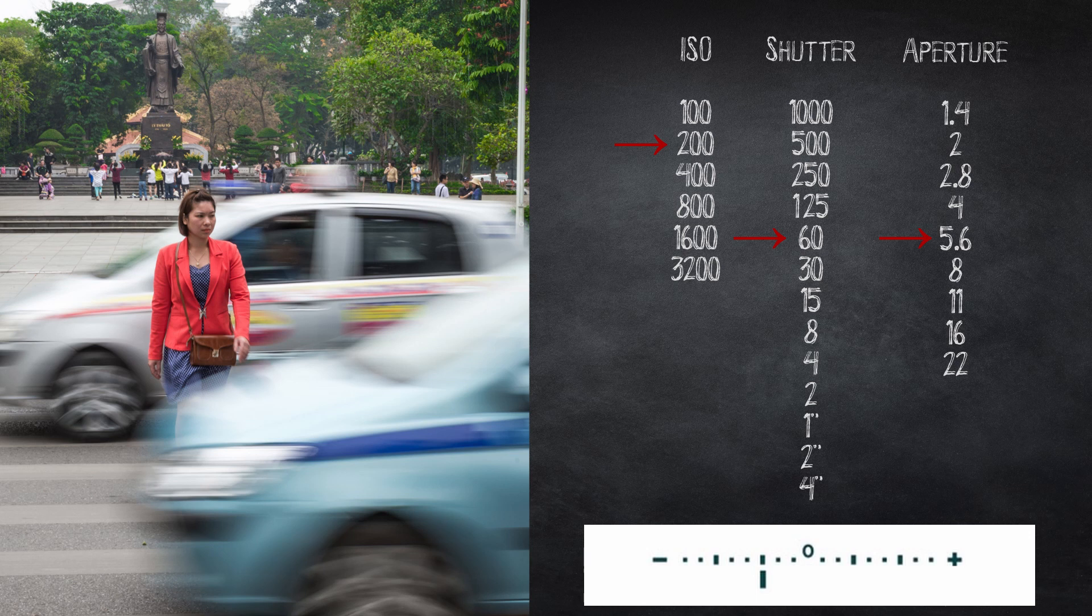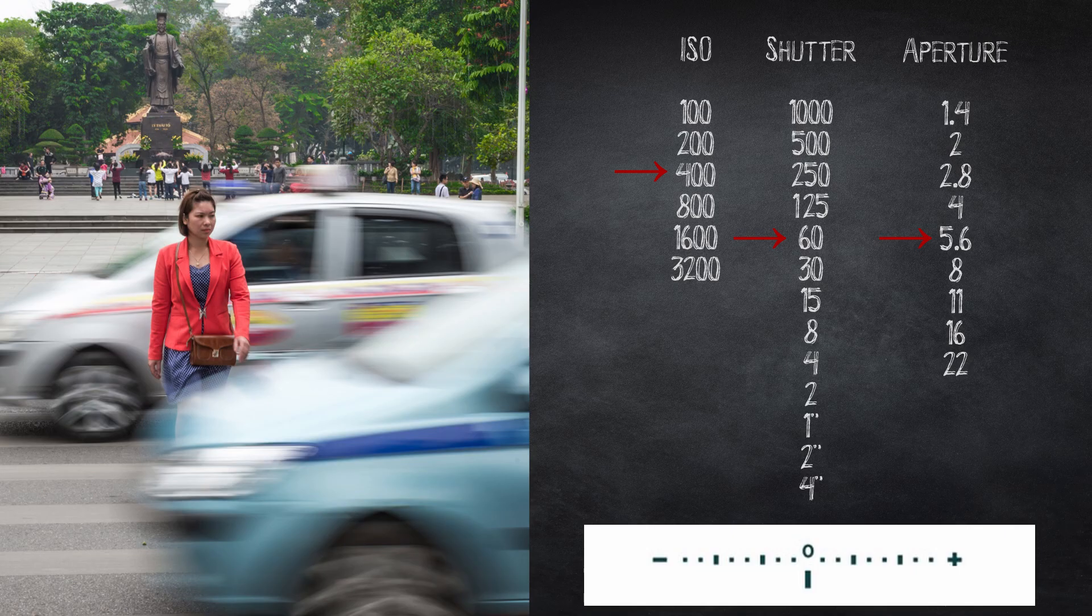For the second stop of light you have the choice of either open the aperture to f4 or increase the ISO to 400. To be honest both options will work well here so this just comes down to your own personal preference. Personally, although the girl is not moving fast, she's still moving towards the camera so I would leave the aperture at 5.6 and increase the ISO to get this shot, but again either way will work in this scenario.